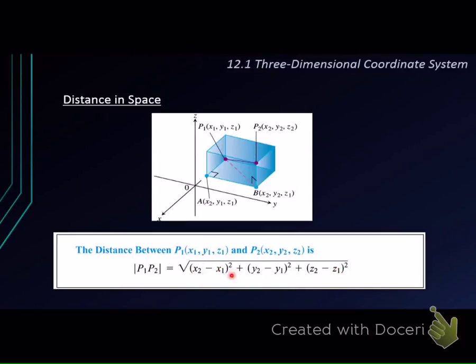Now, if you ask me whether we can interchange the sequence here, taking x1 minus x2, y1 minus y2, z1 minus z2, the answer is yes, because after you have squared all of them, they will get the same answer.